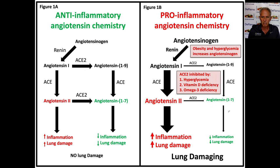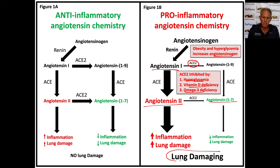Obesity and hyperglycemia increase angiotensinogen, producing more angiotensin-1, and the ACE2 enzyme is inhibited, giving us less 1-9 and less 1-7. What causes the inhibition? Hyperglycemia, diabetes, and even aging — as we age, most people become hypertensive partly because we produce less ACE2. This is compounded by being obese and diabetic. Heart disease, vitamin D deficiency, and a lack of omega-3s lead to further inhibition. So there is a large imbalance between pro-inflammatory angiotensin-2 and anti-inflammatory angiotensin-1-7, which can lead to lung damage.